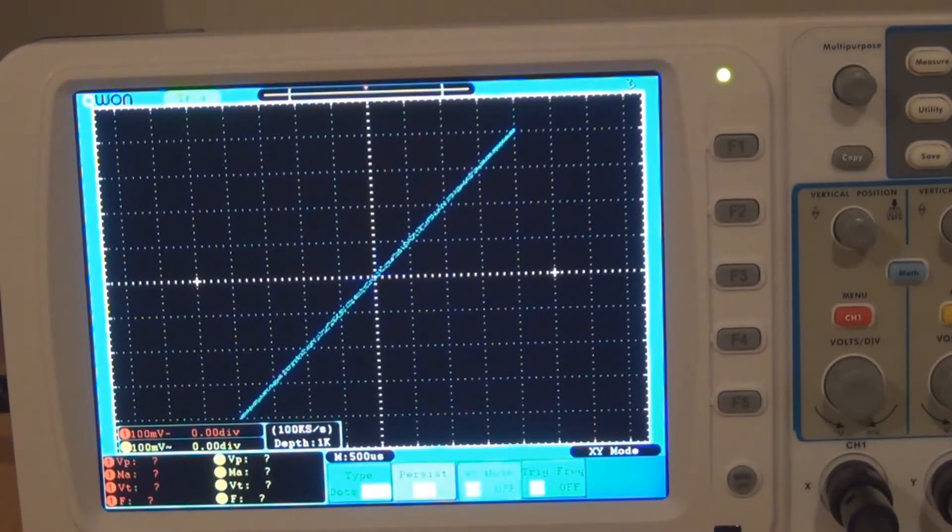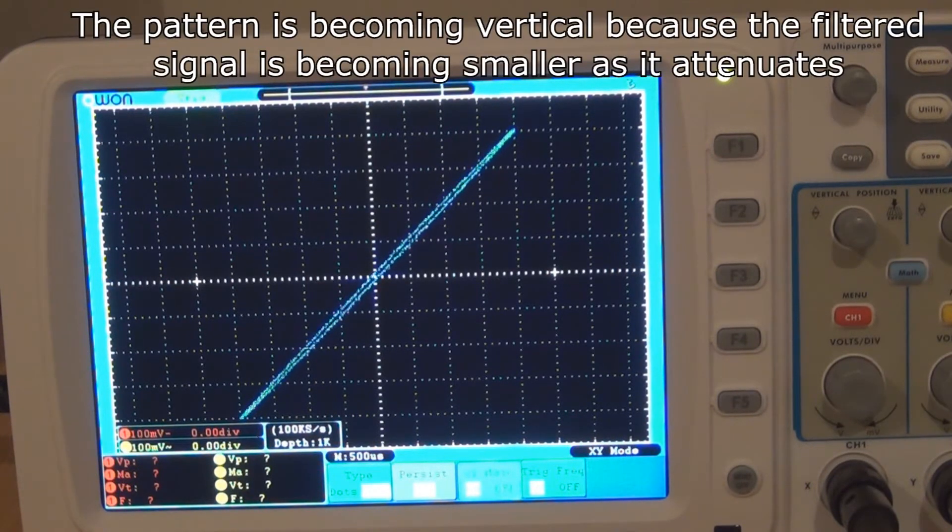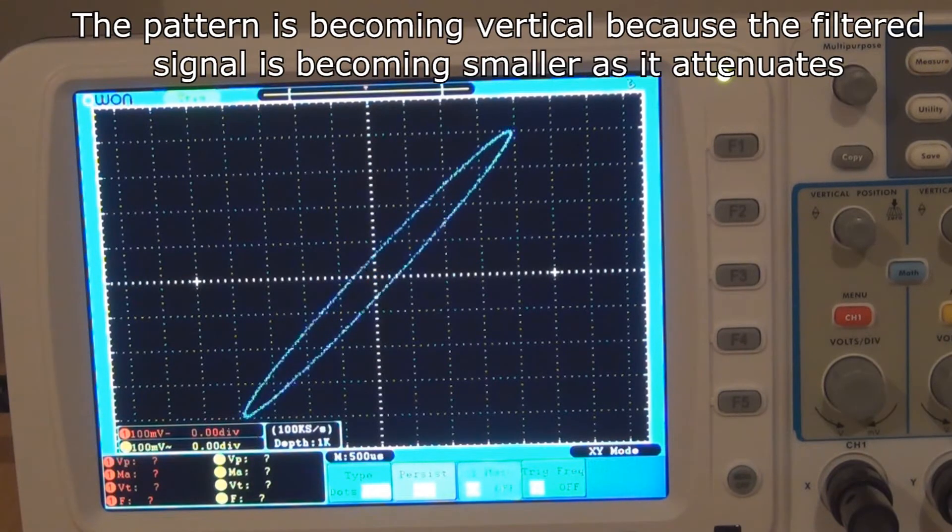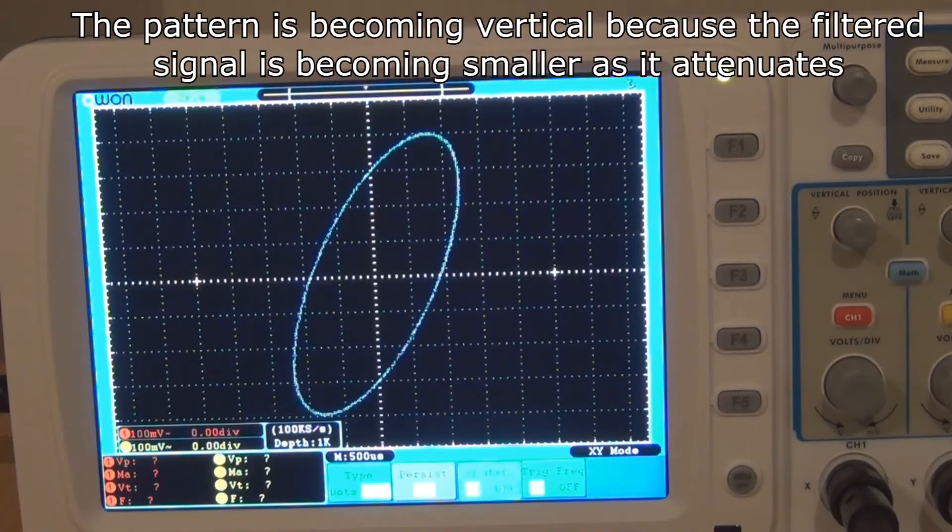So this is a view in XY mode of the filter and you can see that they're pretty close there. I'm on 12kHz at the moment. As you go down, they slowly start to separate. You start to get an ellipse, I guess you'd call it, as the phase starts to separate further and further.